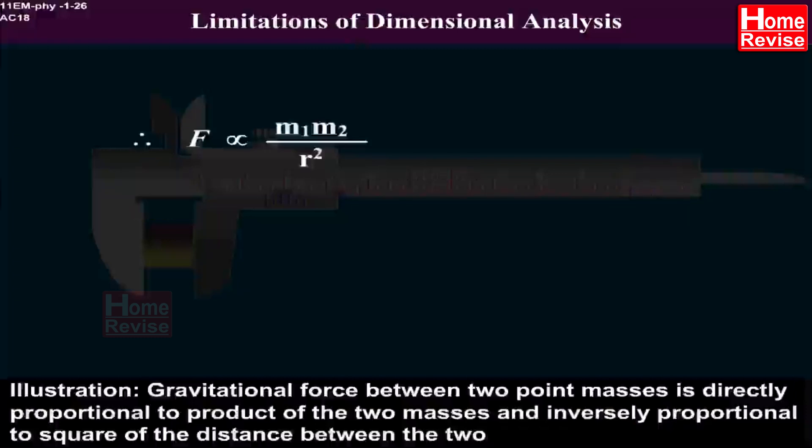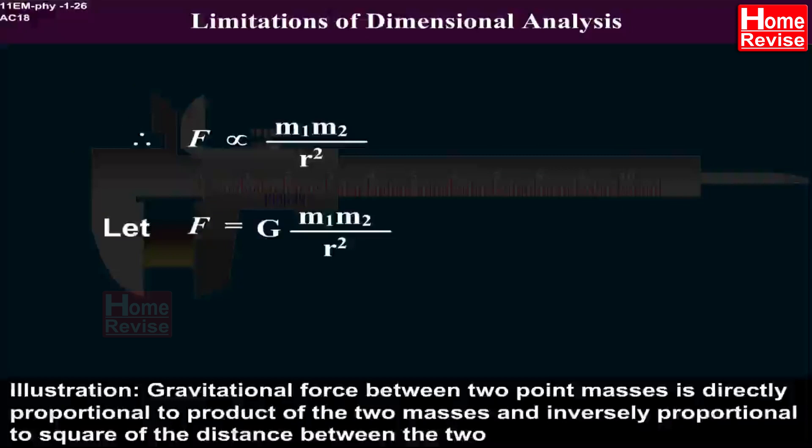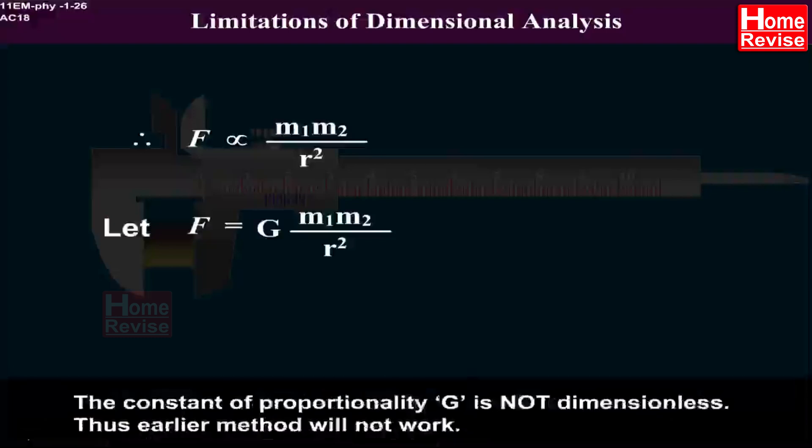f is directly proportional to m1 m2 upon r square. 5. Let f is equal to g into m1 m2 upon r square. The constant of proportionality g is not dimensionless.